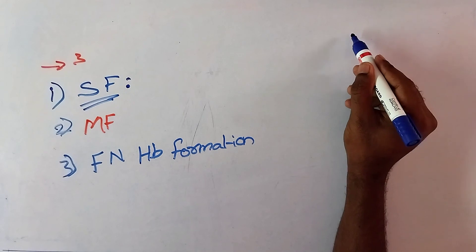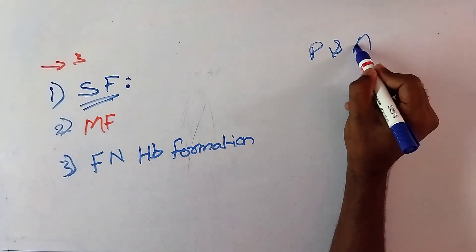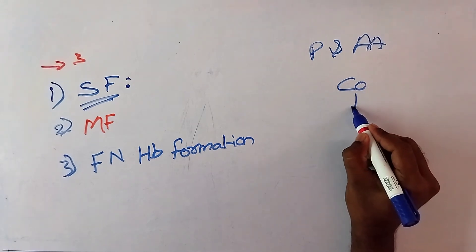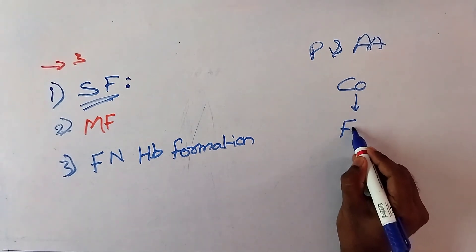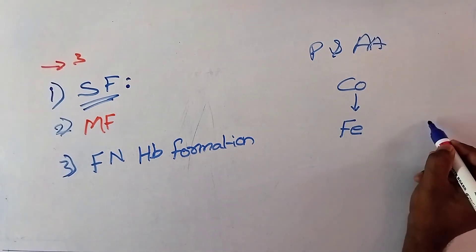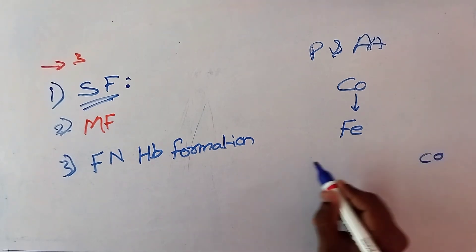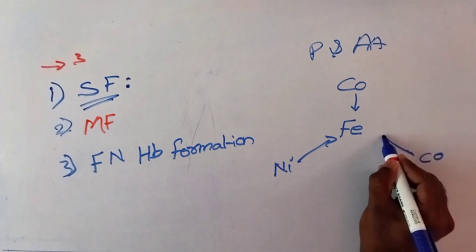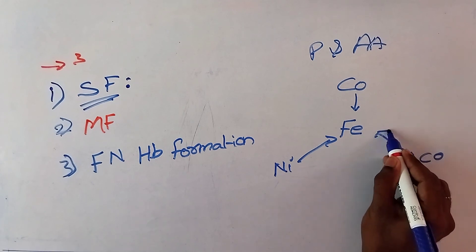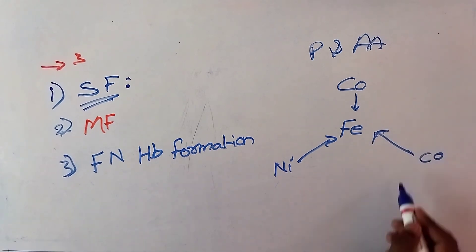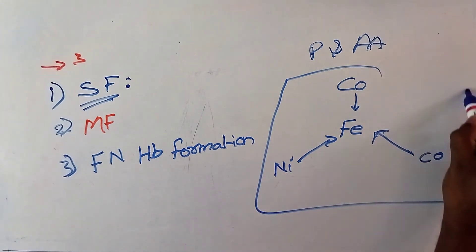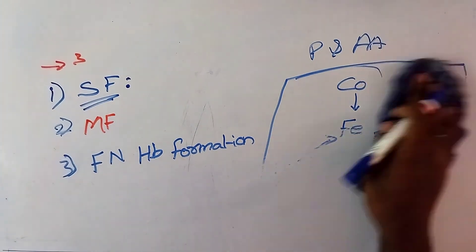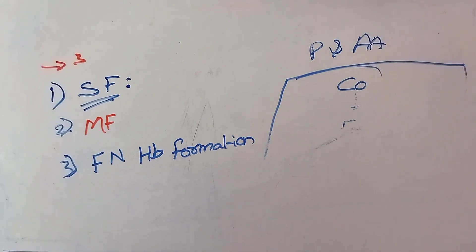To repeat: proteins and amino acids, iron, copper helps in the formation of iron, and cobalt and nickel are used by iron for the formation of hemoglobin. This is for today. Thank you all. We will meet again tomorrow.